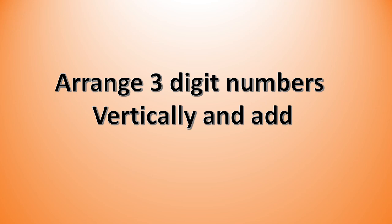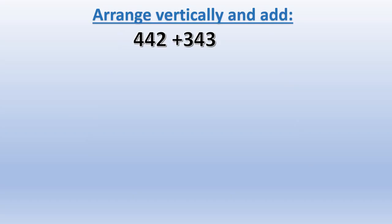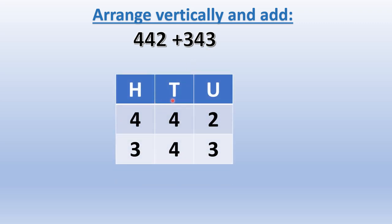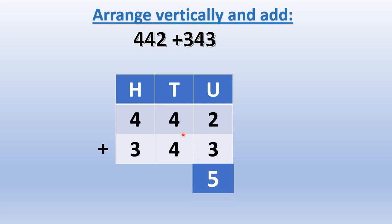Now we shall arrange 3-digit numbers vertically and add. 442 plus 343. We write the place values: hundreds, tens, and units. We write 4 in the hundreds column, 4 in the tens column, and 2 in the units column. For 343, we write 3 in the hundreds column, 4 in the tens column, 3 in the units column. We write the addition sign. 2 units plus 3 units — we get 5 units. 4 tens plus 4 tens — we get 8 tens. 4 hundreds plus 3 hundreds — we get 7 hundreds. So 442 plus 343 we get 785.